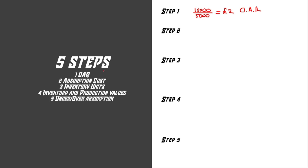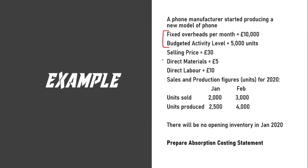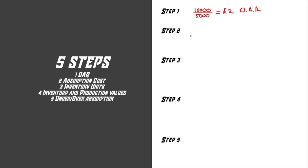Step two is to calculate the absorption cost. We're going to combine the fixed costs and variable costs together. The variable costs part covers direct materials and direct labour, and the fixed cost part is the overhead absorption rate. Direct materials is £5, direct labour is £10, and overhead absorption rate is £2. Adding all of these together gives us £17, and that £17 is the absorption cost.